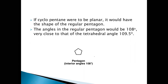But if you assume that cyclopentane were to be planar, it's a simple regular pentagon with an interior angle of 108 degrees. This is very close to the tetrahedral angle of 109.5 degrees. So according to Baeyer's theory, any cyclic structure with a tetrahedral angle of 109.5 degrees is very stable because it is free from any type of ring strain, that is angle strain.